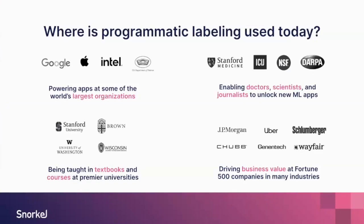Where is programmatic labeling used today? It's been deployed in many ML-forward organizations such as Google, Apple, Intel, and the US Department of Defense. It's been used to enable doctors, scientists, and journalists to unlock new ML applications. It's also being taught in textbooks, and it's been used at many Fortune 500 companies to drive value out of ML tasks.